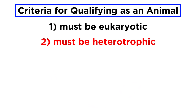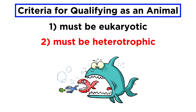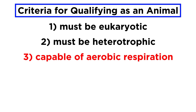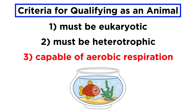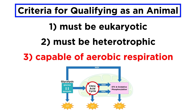Number two, animals are heterotrophic, meaning they primarily get their energy by eating other things, unlike the plants we learned about in the botany series, which can make their own food. Number three, animals are capable of aerobic respiration, which means that breathing oxygen is a requirement for energy production and therefore survival. This includes aquatic organisms, which actually do breathe oxygen that is dissolved in water, instead of oxygen present in the air. If you need a refresher on aerobic respiration, visit my biochemistry tutorials on this subject.